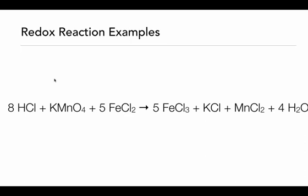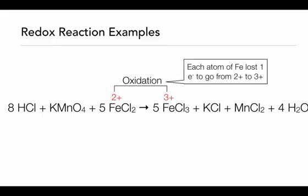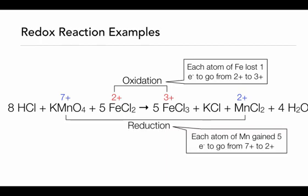This reaction looks more complex, but it's still a redox reaction where only two atoms are changing their oxidation states. The hydrogens, chlorines, and oxygens all stay at the same oxidation state. Only the manganese and the iron are going to change. The iron starts at a two plus oxidation state on the reactant side and ends at three plus on the product side — this is oxidation, as each iron atom has lost one electron. The manganese starts at a seven plus oxidation state on the reactant side and ends at two plus on the product side — each manganese atom has gained five electrons.